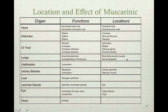The gallbladder causes contraction; the urinary bladder causes relaxation and contraction. The liver promotes glycogen synthesis. Lacrimal glands increase secretions and tearing. In the eye, parasympathetic stimulation causes contraction for near vision and pupil constriction. In the penis, the parasympathetic nervous system — via muscarinic receptors — causes erection.